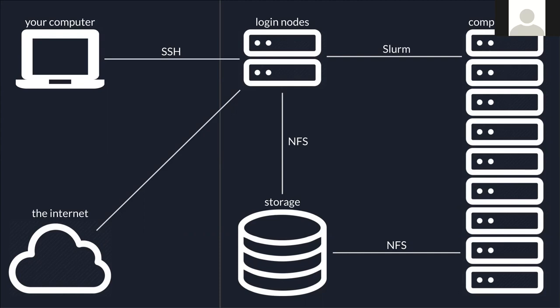From the login nodes, we submit jobs via Slurm to the compute nodes. Essentially you're telling Slurm: here's the work I want to do, go schedule it on one or more compute nodes. Here are the resources I need — say six CPUs, eight gigabytes of memory, for six hours. Slurm figures out where on the compute nodes your job can run, schedules it, runs it, and tells you when it's finished.